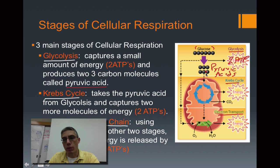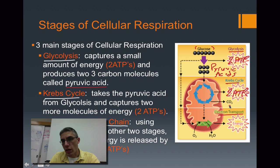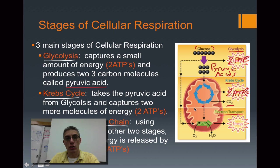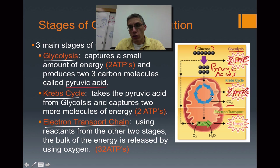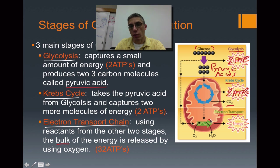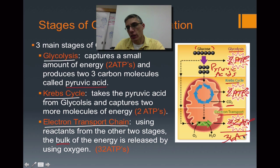Those pyruvic acids are brought into the Krebs cycle, where we produce an additional two ATPs for the cell to use. In addition, we also produce CO2 — the CO2 we breathe out, which is a waste product of cell respiration. The products from the Krebs cycle are also used to power the electron transport chain. We get the bulk of our energy from this third process, producing 32 ATPs. Adding all three stages together from a complete process of cell respiration, we produce 36 ATPs total.